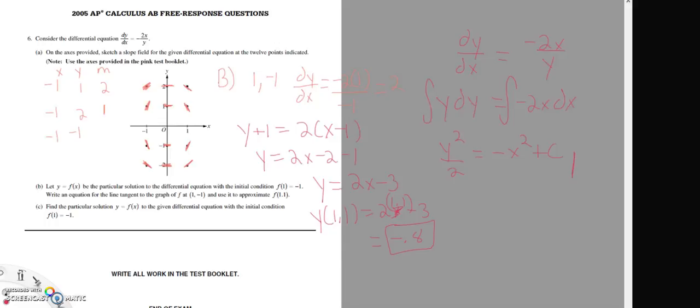So now we're going to get y squared over 2 equals negative x squared plus c. Now we're going to plug in the negative 1, 1 comma negative 1. So now we're going to get 1 half equals negative 1 plus c. C equals 3 halves.